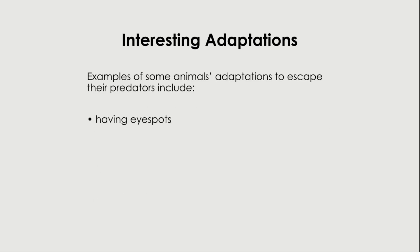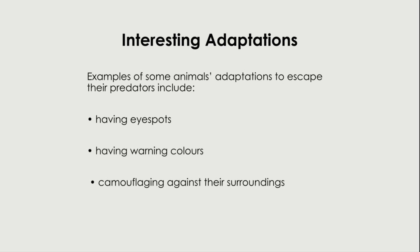Some animals have eye spots, warning colors, or camouflage against their surroundings. These help them to escape their predators. Moving in large groups is also an adaptation — each of these adaptations helps to protect the animal itself.